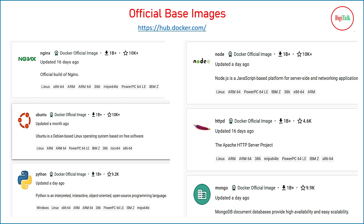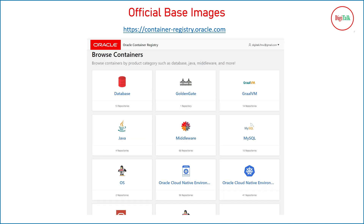There are multiple official images available on the internet today, with many organizations providing Docker images. One source is hub.docker.com — you can see in the screenshot there are many images: nginx, ubuntu, python, mongo, httpd, node.js and more. If you want to build any website with nginx, python, mongo, httpd, or node.js, you can directly pull those images from the official Docker website.